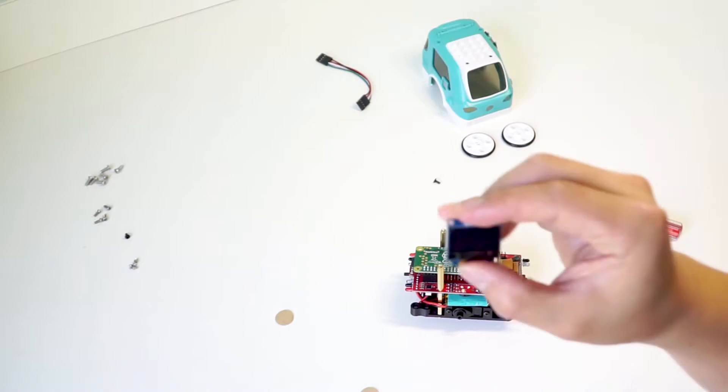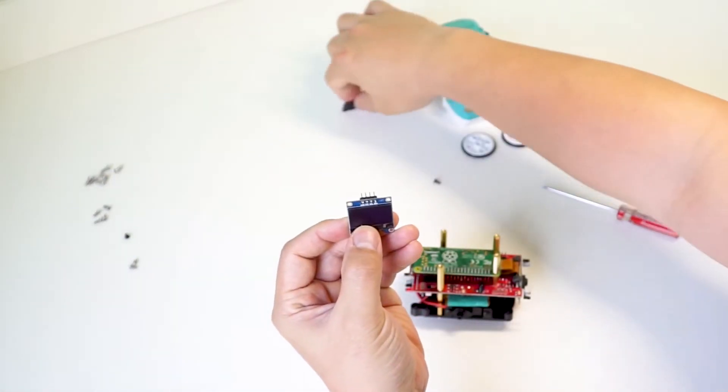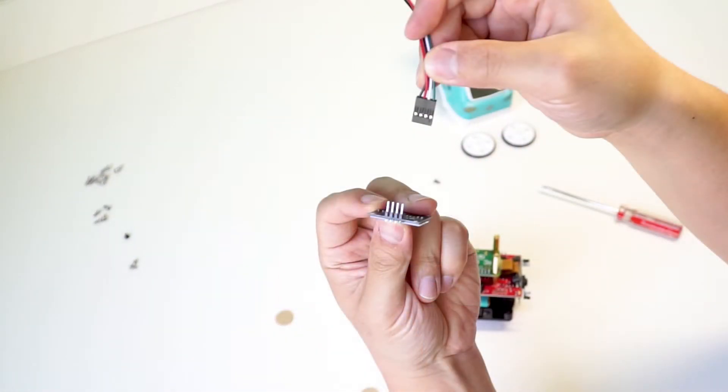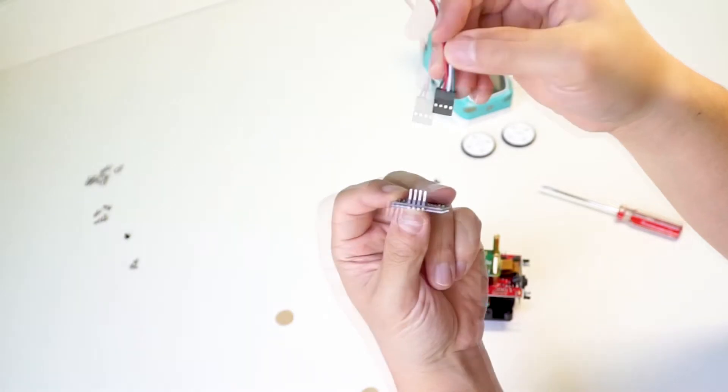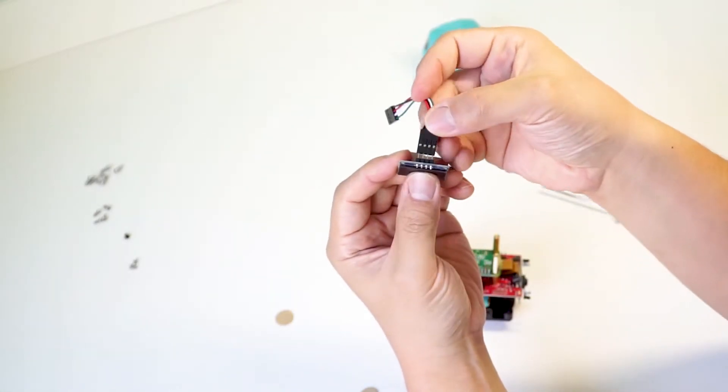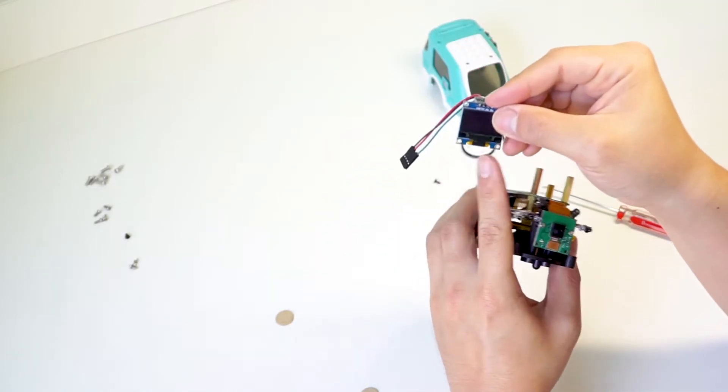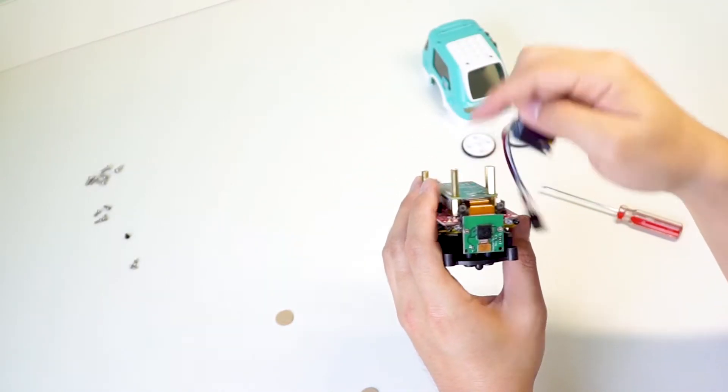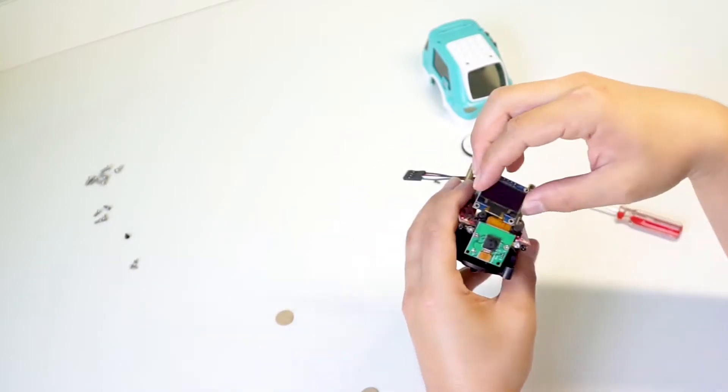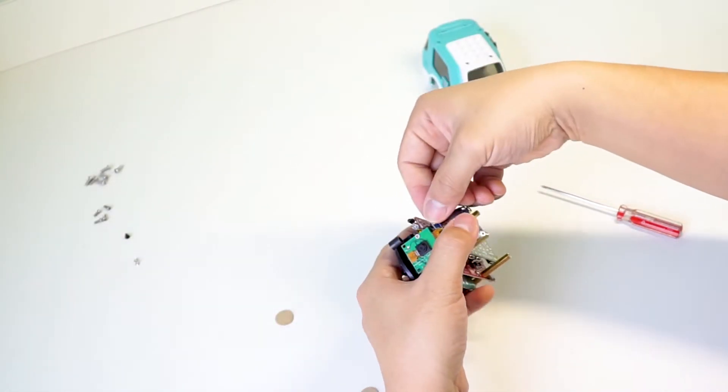Now let's attach the OLED screen. Connect the jumper wires to the OLED screen so that the black wire is on the left and the green wire is on the right. Then line up the bottom two holes on the OLED with the top two holes on the mounting bracket and attach it with two mounting bolts. And be careful, make sure not to tighten it so much that the OLED cracks.